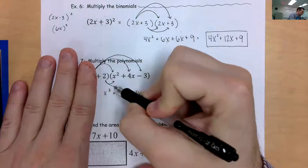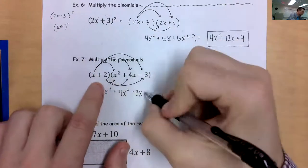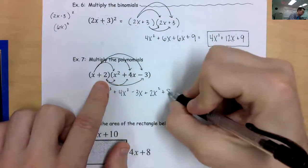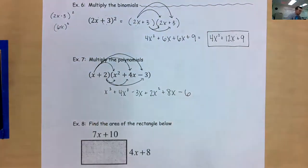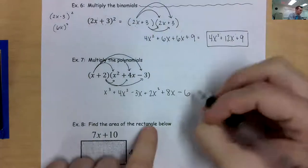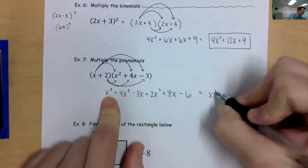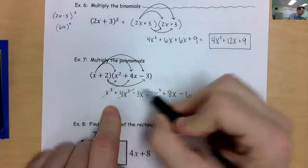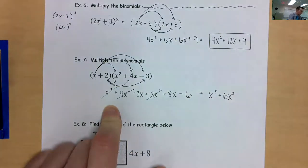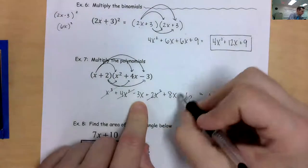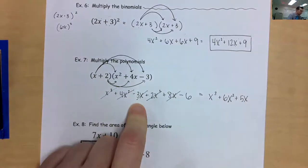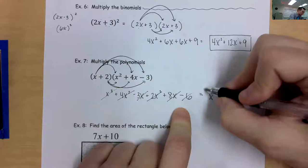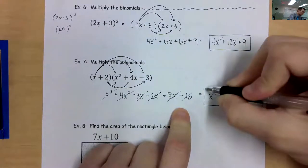Now I have to double distribute — this time I distribute the 2. 2 times x squared is 2x squared. 2 times 4x is 8x. And 2 times negative 3 is negative 6. You should always simplify automatically. Start with the highest power: x cubed has no other like terms. Anything with x squared: 4x squared and 2x squared gives 6x squared. Anything with x: 8x and negative 3x gives 5x. My negative 6 has no like terms. So my final simplified answer is x cubed plus 6x squared plus 5x minus 6.